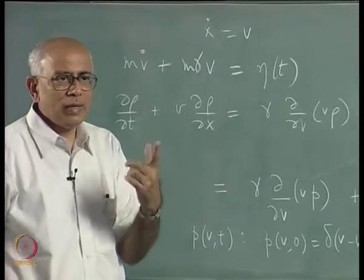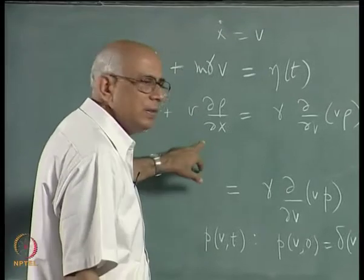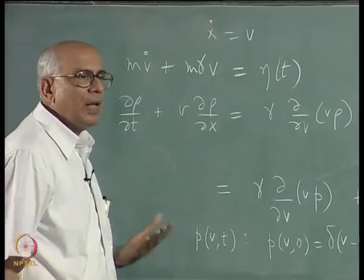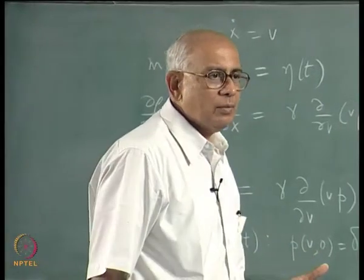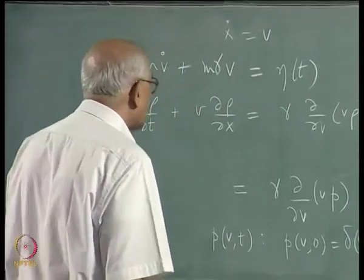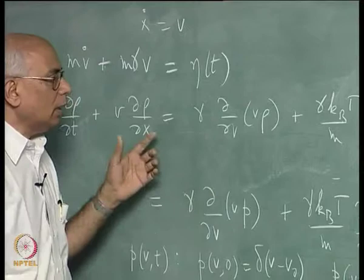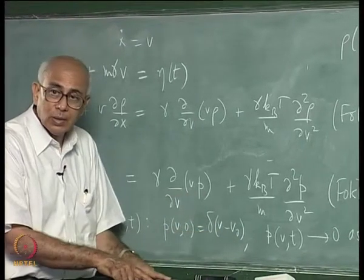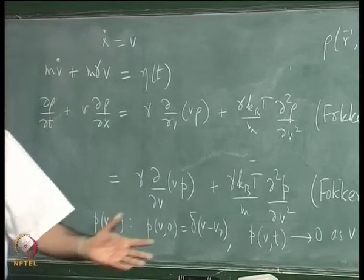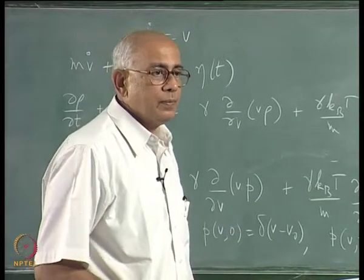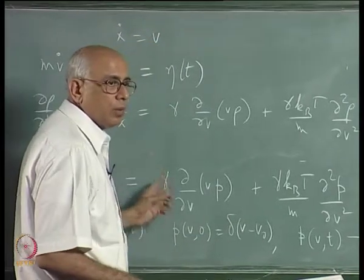With initial condition ρ(x, v, 0) = δ(v – v₀)·δ(x – x₀) and natural boundary conditions that ρ vanishes as x → ±∞ and v → ±∞, the solution turns out to be a fairly complicated but jointly Gaussian distribution in x and v — a multivariate Gaussian distribution.